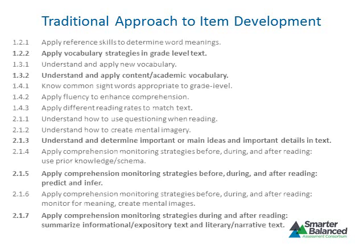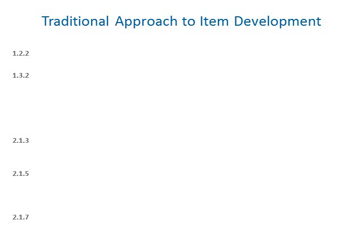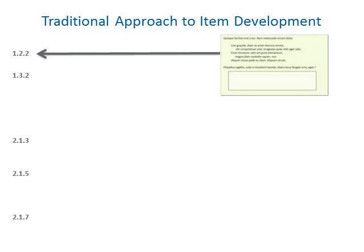To sample the standards, a small number of items or tasks were developed to measure a subset of the content standards. One characteristic of a good test was the extent to which the items represented the full range of standards and the extent to which each item appeared to measure a single standard. The primary focus was on the alignment between the content of the item and the content standard. While alignment is important, there is a key weakness in this traditional approach: the information elicited by the item may not say anything meaningful about whether or not the student has achieved the standard.